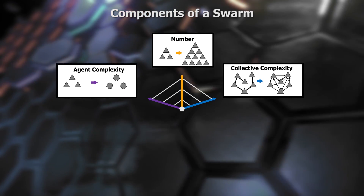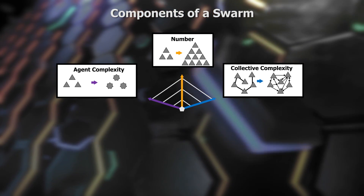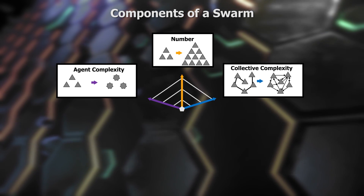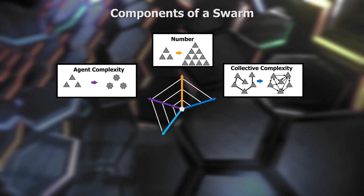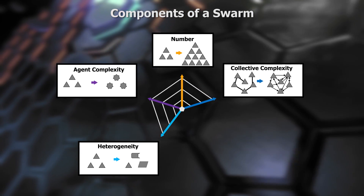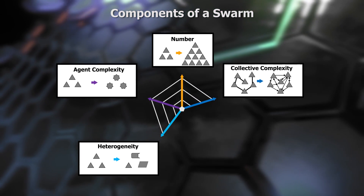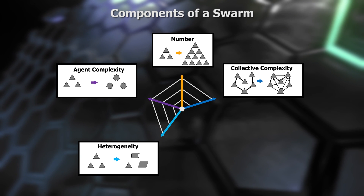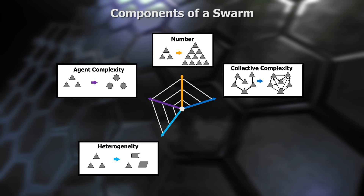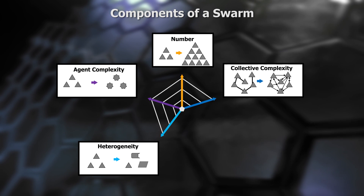A couple of other dimensions that really broaden the perspective of what swarms can do include the fact that they could be composed of different types of agents — so you have heterogeneity, a mixture, not just in terms of platforms, but also in terms of functions and the roles that they can play, just like you have different roles on a team of human players or human teammates.